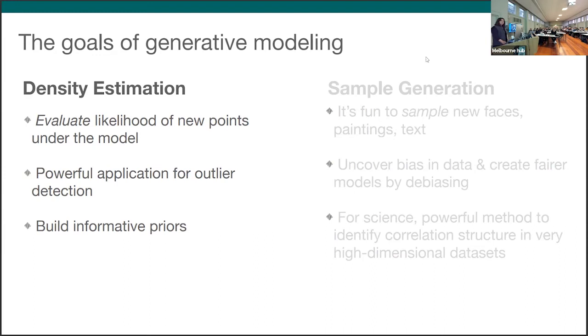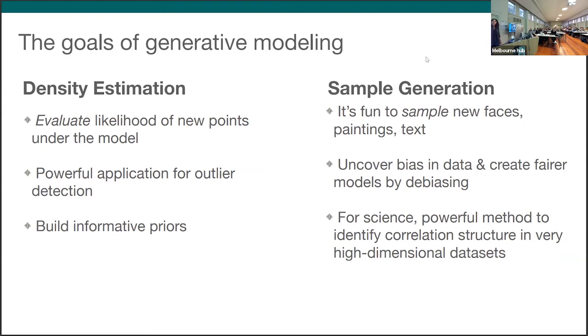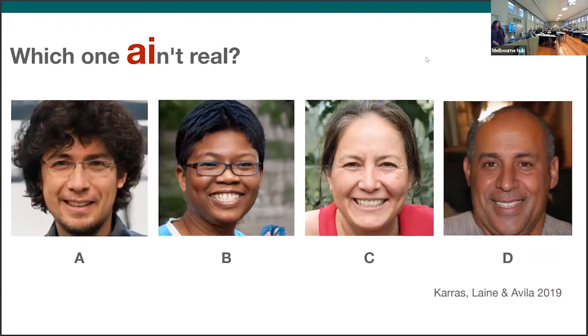At the same time, there's another goal that we're also very happy about, called sample generation. So once we have learned the PDF, we can also draw new samples from the same PDF. Why are we interested in this? Because it's fun to sample new faces, paintings, and text, as OpenAI and DeepMind would like us to think. But for example, in social science and social policy work, this type of sample generation application is also very important because it allows us to uncover bias in data and therefore create fairer models by debiasing. In science, it's a very powerful method to identify correlation structure in very high dimensional datasets, like the ones I work with that have over thousands, many thousands of dimensions.